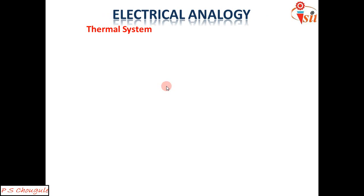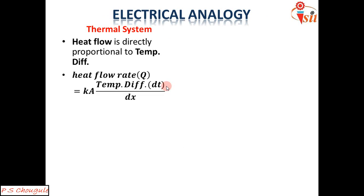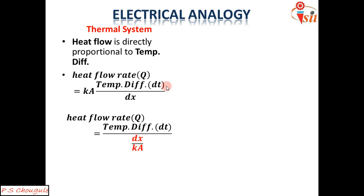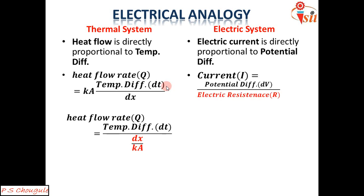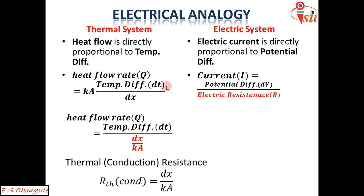Now, the electrical analogy for the thermal system: in a thermal system, heat flow is directly proportional to temperature difference, so Q = K·A·(ΔT/dx), which can be rewritten as Q = ΔT / (dx/KA). This is analogous to the electrical system where current I = potential difference / electrical resistance. Comparing the two equations, dx/(K·A) is analogous to electrical resistance, and we call it thermal resistance. For conduction, thermal resistance = dx/(K·A).